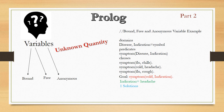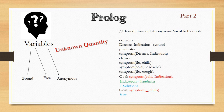Next, in the goal I am writing symptom(_, chills). This underscore or hyphen shows that disease has become an anonymous variable. Anonymous variable means no variable, no value — whether the value is true or not, Prolog will not bother about it. It will check only whether chills is written in the database. Because chills is in the fact for flu, but in return you will not get flu — you will only get true.